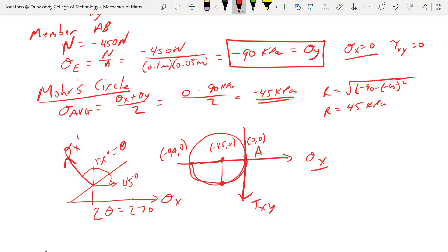This is my point that I'm looking for. And so what do I get at this point? I find sigma x prime is negative 45 kPa. Tau x y prime is also 45 kPa, but it's positive. So there we are. We have sigma x prime, tau x prime y prime, negative 45, positive 45, and we got that from Mohr's circle.